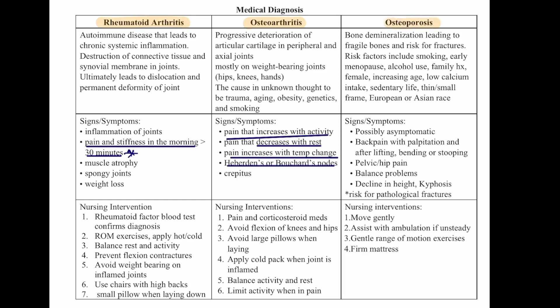Osteoporosis is bone demineralization leading to fragile bones and risk for fractures. Risk factors include smoking, early menopause, alcohol use, family history, being female, increased age, low calcium intake, sedentary lifestyle, thin and small frame, and European or Asian race. Signs and symptoms: possibly asymptomatic; back pain with palpitations after lifting, bending, or stooping; pelvic or hip pain; balance problems; a decline in height or kyphosis; and risk for pathological fractures. Nursing interventions: move them gently, assist with ambulation if unsteady, gentle range of motion exercises, and a firm mattress.